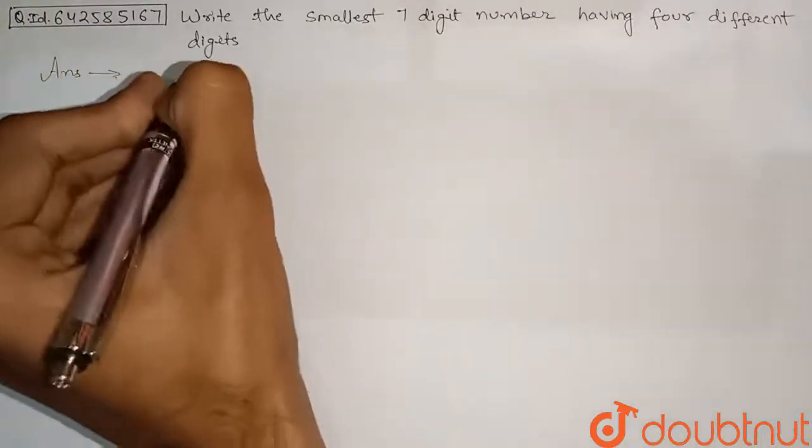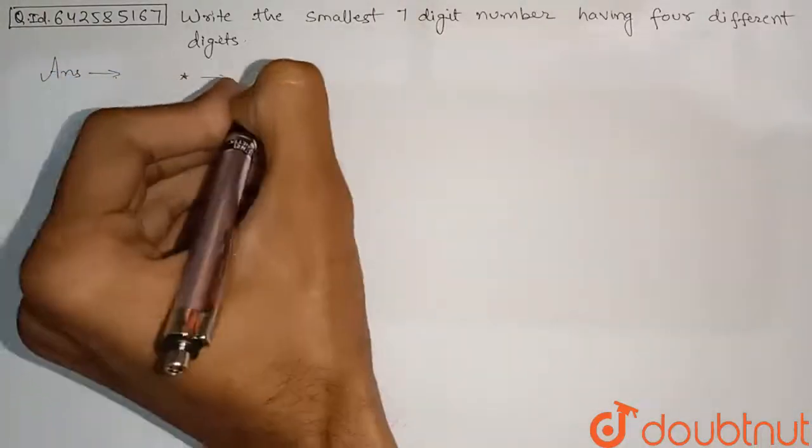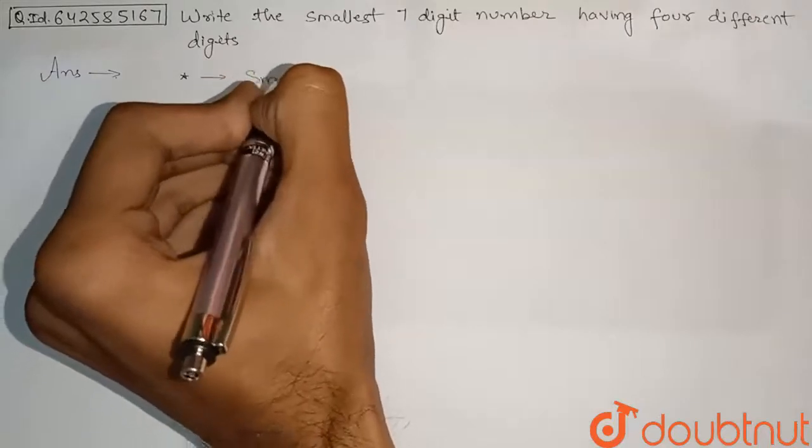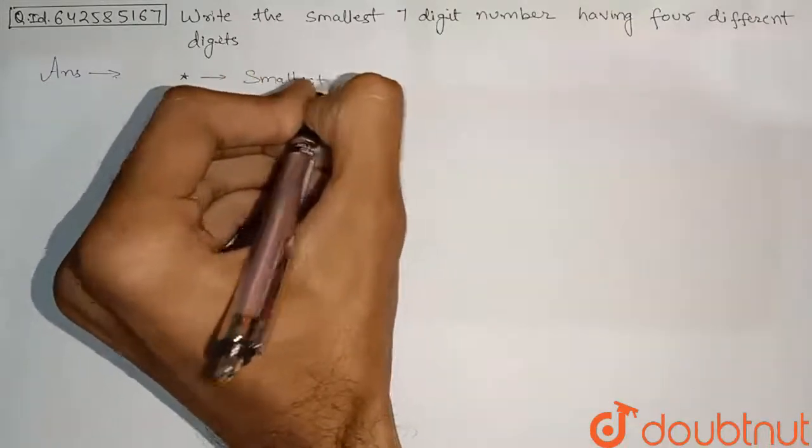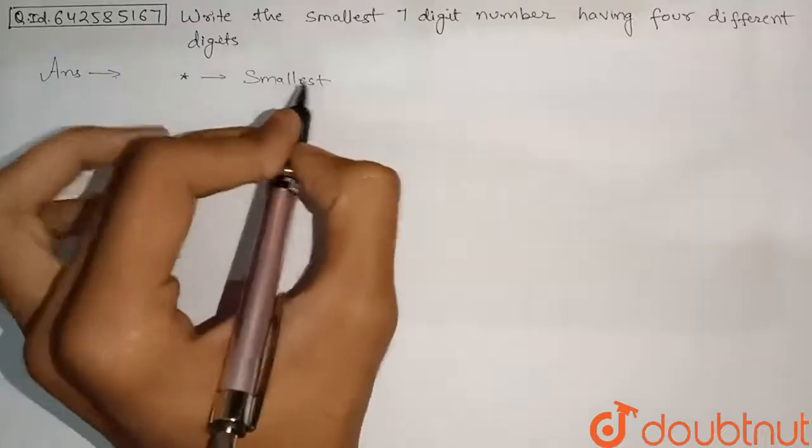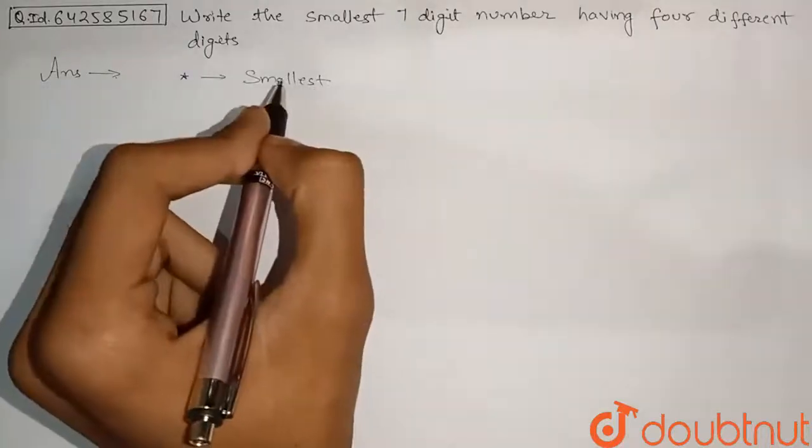So here we have to write a smallest number. So the first point is that the number will be smallest. It means that we will use the smallest 4 digits in the formation of this number.